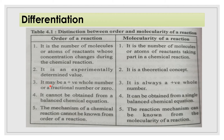Third point: order of reaction may be a positive whole number, a fractional number, or zero. But molecularity is always a positive whole number — it cannot be negative. Fourth point: the order of reaction cannot be obtained from a balanced chemical equation, but molecularity can be obtained from a single balanced chemical equation.